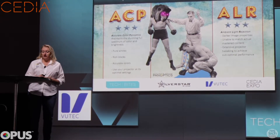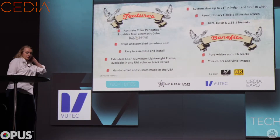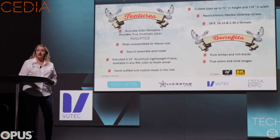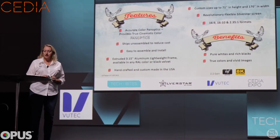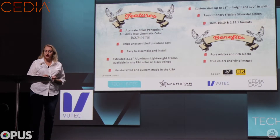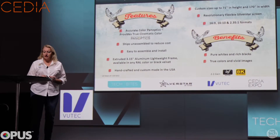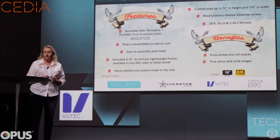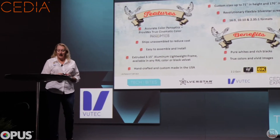But what if you could have the lights on and maintain a stunning full spectrum of colour and brightness? Because that's exactly what ACP does. Accurate Colour Panoptics provides true cinematic colour. Here are a few of the benefits of the Silverstar Panoflex: it's ISF certified, easy to assemble and install, packed and shipped in lighter, more compact cartons — reducing the shipping cost and carbon footprint. Able to be installed in areas that a large fixed-frame screen cannot. It features a 3.15-inch extruded aluminium lightweight frame, available in any RAL colour or standard black velvet. It has a 2.2 gain, 8K HD, Ultra HD, custom sizes up to 71 inches in height and 170 inches in width. It comes in 16:9, 16:10, and 2.35:1 formats. It's US patented and has Accurate Colour Panoptics.